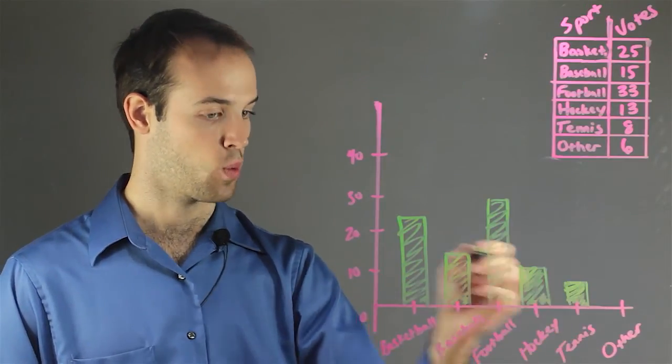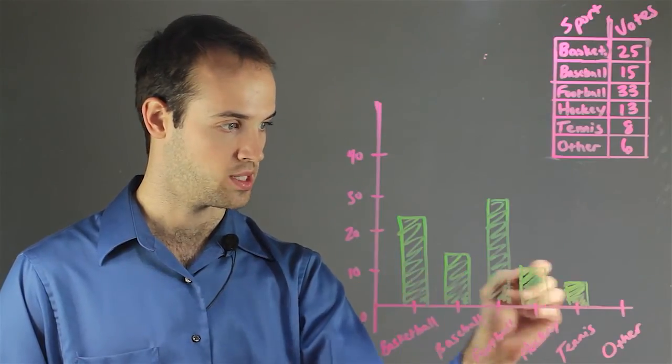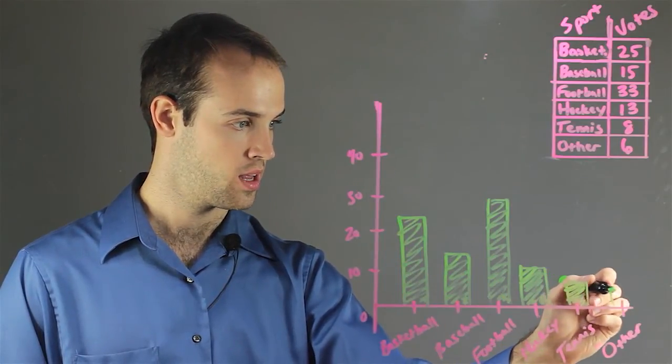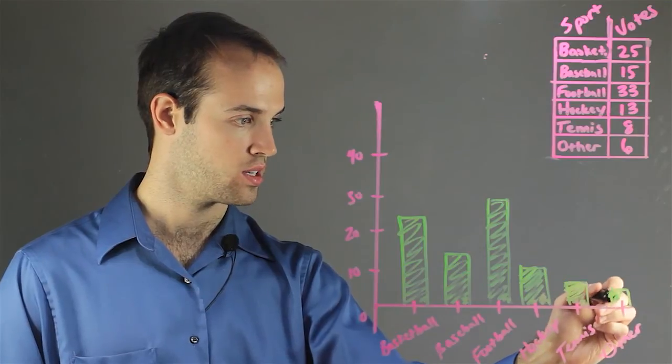And other sports got 6 votes, so I go just about halfway between 0 and 10 and draw it out just like that.